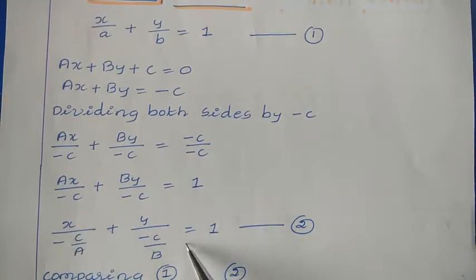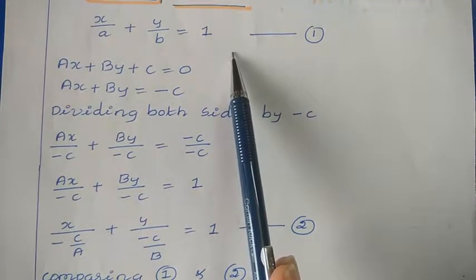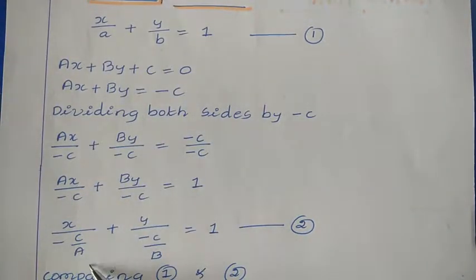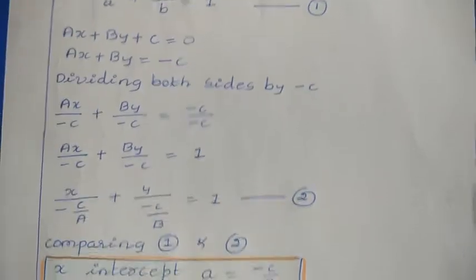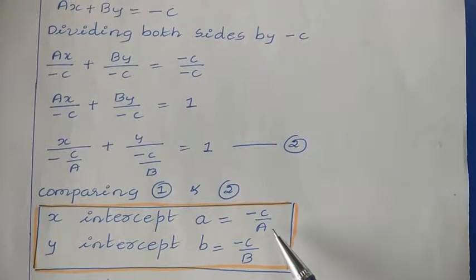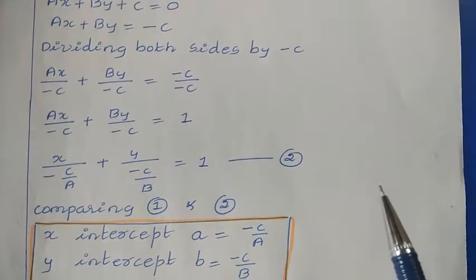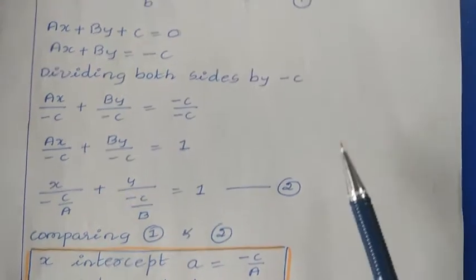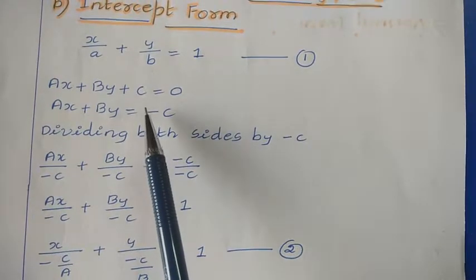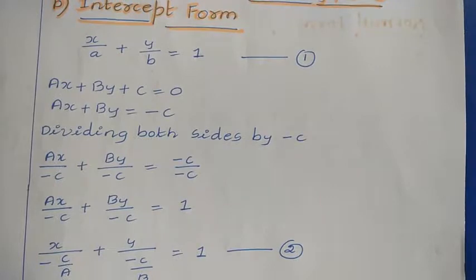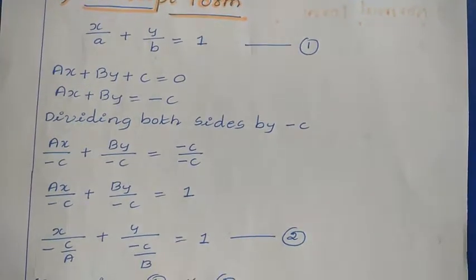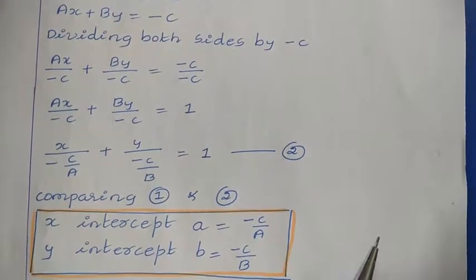Comparing with the intercept form equation, we can see that A equals minus C over A and B equals minus C over B. So the X intercept is minus C over A and the Y intercept is minus C over B.